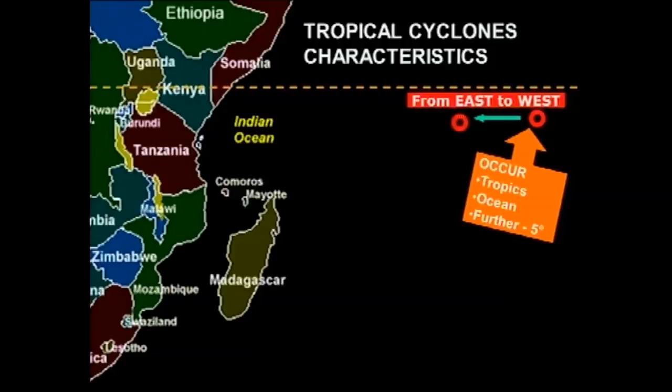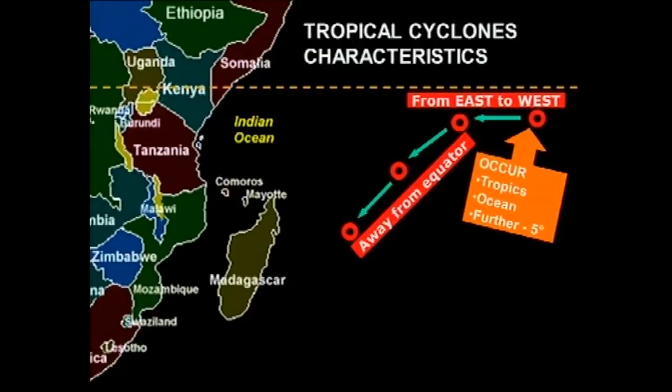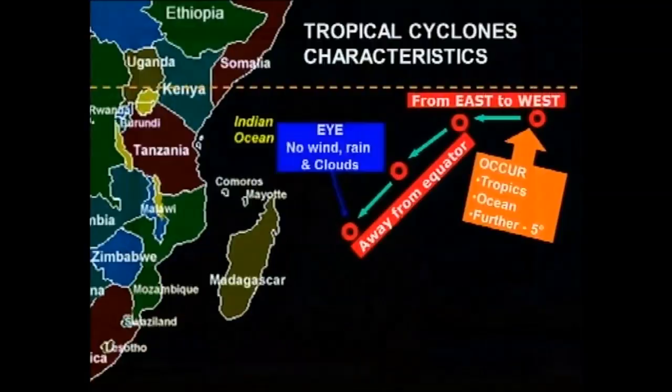Here we've got the movement of our tropical cyclone — it's moving from east to west. Very important: remember our mid-latitude cyclone moved from west to east, please don't get mixed up. The tropical cyclone is moving away from the equator. Why does it move away from the equator? Because if it moves towards the equator, there's no Coriolis force at the equator. So it must move away from the equator.